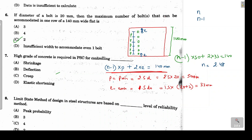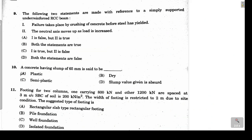The seventh problem asks why high-grade concrete is used in prestressed concrete. While high-grade concrete contributes to reduced shrinkage, deflection, creep, and elastic shortening, the best answer is creep. Option relating to reduction in creep is the correct answer.